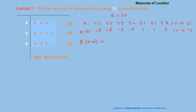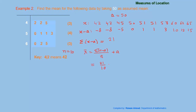Now we find the sum of all these values, sigma(x minus A). After adding all the values we get 21. The formula for the mean is: mean equals sigma(x minus A) divided by n, plus A. Here n is the number of values, which is 10. Substituting: 21 divided by 10 plus 50 equals 52.1. So the mean of this data is 52.1.